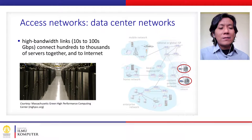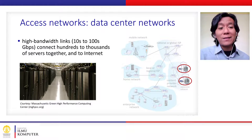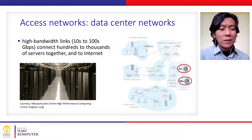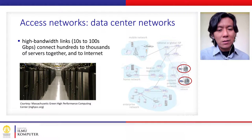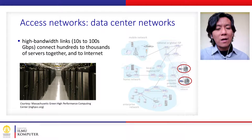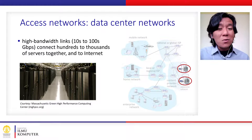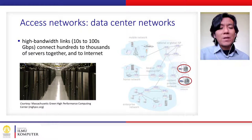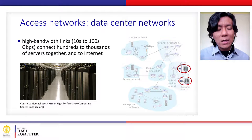How do data center networks work? They are also part of the edge network but have very substantial differences from common hosts or end systems. They usually have big capacity because they must serve millions of users requesting services like websites. Basically, they have similar infrastructure but with bigger transmission and bandwidth links.